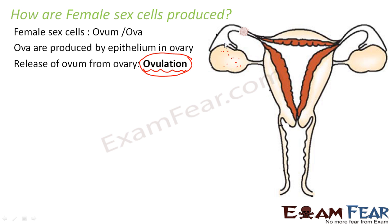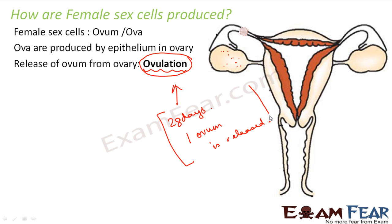The maturation of these immature eggs takes place under the influence of hormones controlled by the pituitary gland, the master gland of the body, which controls the secretion of sex hormones. One matured egg is released from either of the ovaries every 28 days. So ovulation takes place every 28 days, and this is how female sex cells are produced.